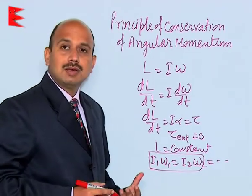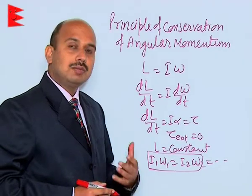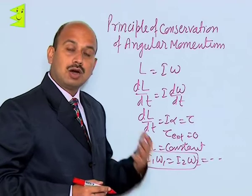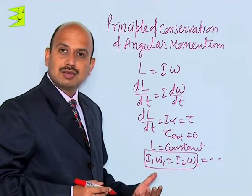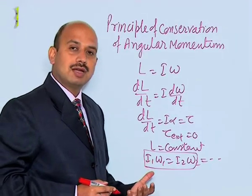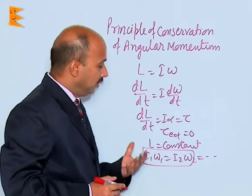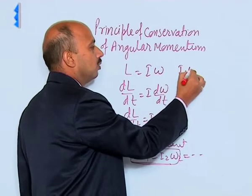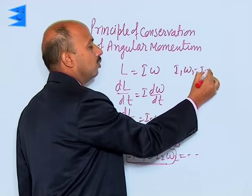You might have seen ballet dancers. You know when the ballet dancers dance on the floor, sometimes they outstretch their hand and leg and sometimes they fold their hands and leg. So, if you take this relation I1 omega 1 is equal to I2 omega 2.